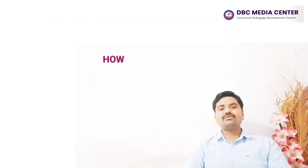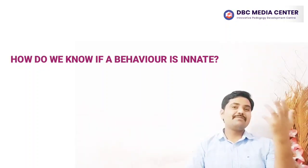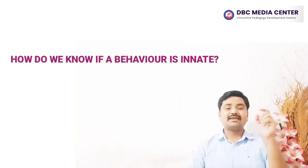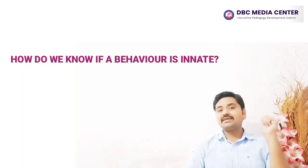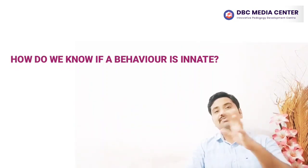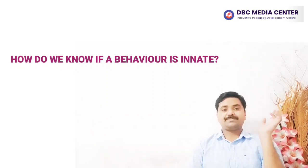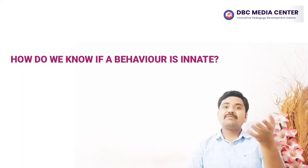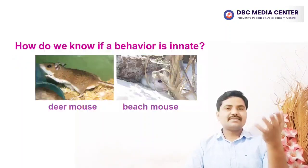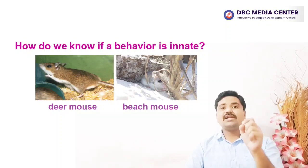How do we know if a behavior is innate? By definition, innate behavior is stereotyped and genetically hard-wired rather than learned. Scientists test whether a behavior is innate by seeing whether it is performed correctly by naive animals — animals that have not had a chance to learn the behavior through experience. This might involve raising young animals separately from adults, or without exposure to the stimuli that trigger the behavior.